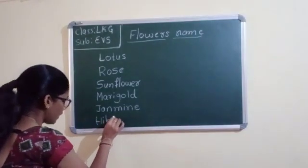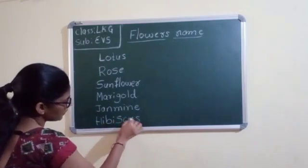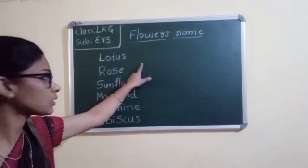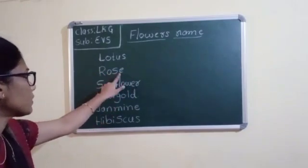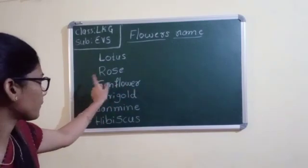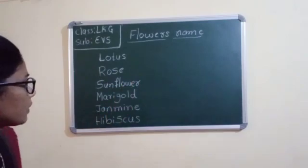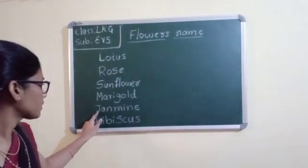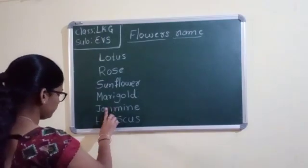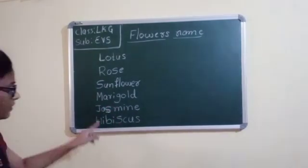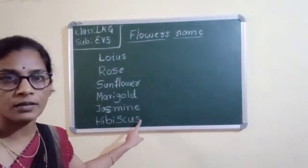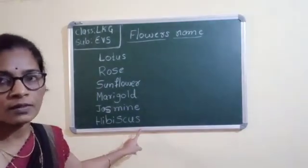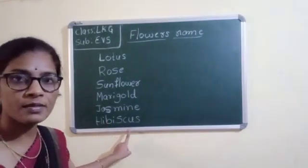And hibiscus. H-I-B-I-S-C-U-S. Hibiscus. How to write the spellings? I told you. L-O-T-U-S Lotus, R-O-S-E Rose, S-U-N F-L-O-W-E-R Sunflower, M-A-R-I G-O-L-D Marigold, J-A-S-M-I-N-E Jasmine, H-I-B-I-S-C-U-S Hibiscus.